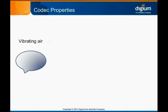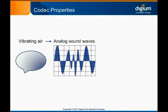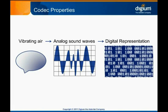Humans speak by vibrating air to create analog sound waves. Sound waves can't be reliably and rapidly transmitted over great distances, so for IP telephony they must be converted to a digital representation that describes the original sound. There are many different ways to digitally represent audio, and each approach is defined by its own codec.